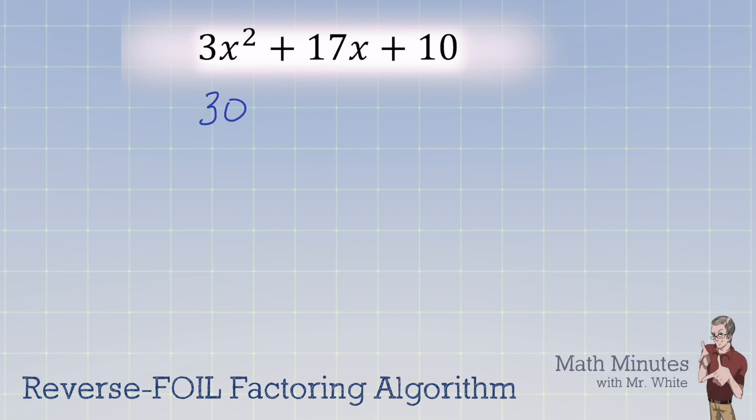Now you have to break down the number 30 in all the different ways through multiplication that you can make 30. So 1 times 30, 2 times 15, 3 times 10, 5 times 6 are the different ways that you can make 30.